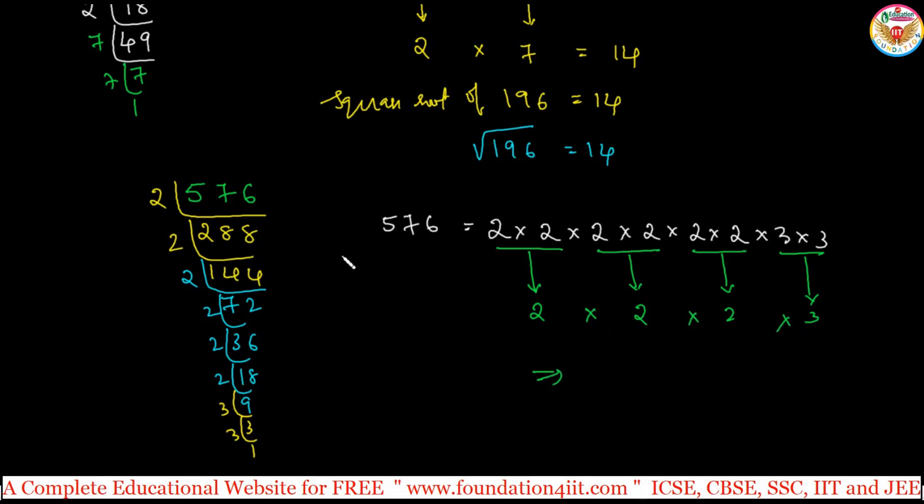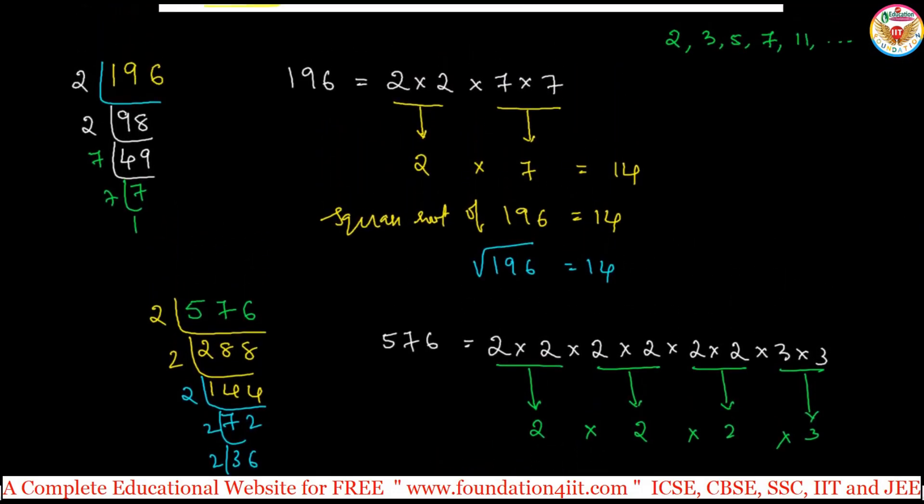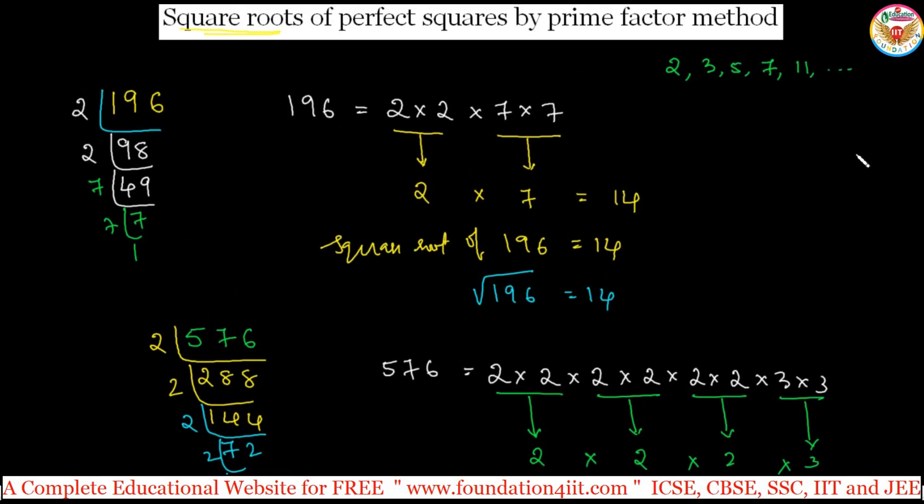By multiplication, you will get the 576 square root. 2 into 2 is 4, times 2 is 8, times 3 is 24. Therefore, square root of 576 equals 24. This is the method of prime factors. Then instant calculation, just by seeing the number, how to find the square root of the perfect square by instant calculation technique, I will show you now.